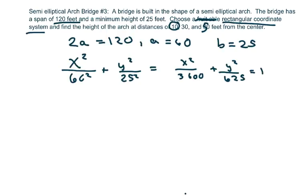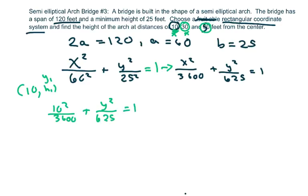Now we're going to test at a distance of 10 feet to find the height. We're plugging in $x = 10$, so we get $\frac{10^2}{3600} + \frac{y^2}{625} = 1$. We're going to solve for $y$. This becomes $\frac{100}{3600} + \frac{y^2}{625} = 1$.